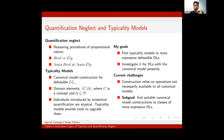My current goal is to port this framework to ELs more expressive than EL-bottom, but that still have the canonical model property, such as horned ELs. My current challenge is that typicality models rely heavily on operations not necessarily available to canonical models in general. Hence, the sub-goal is to find suitable canonical model constructions for this class of more expressive ELs.